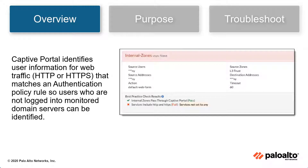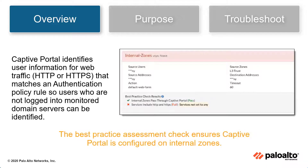Captive Portal identifies user information for web traffic — HTTP or HTTPS — that matches an authentication policy rule, so users who are not logged into monitored domain servers can be identified. The best practice assessment check ensures Captive Portal is configured on internal zones.